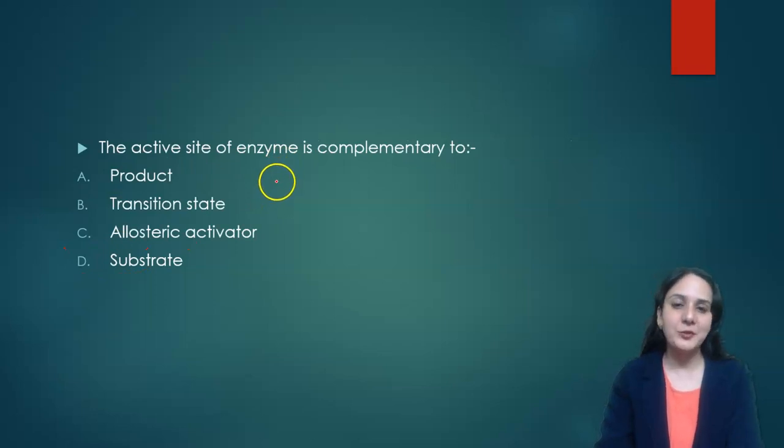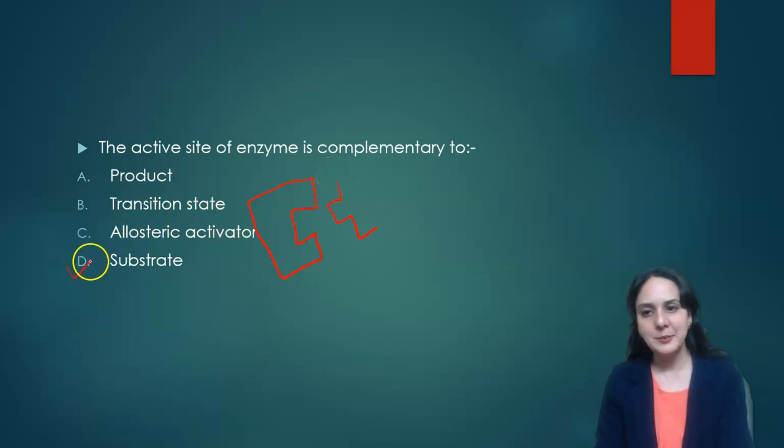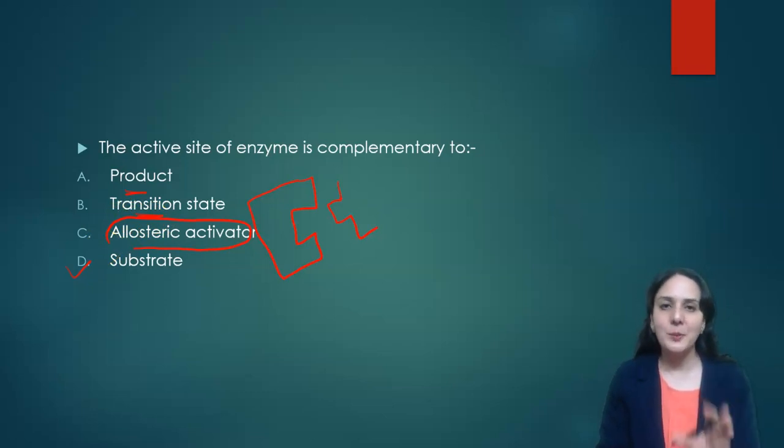Next is: active site of enzyme is complementary to? We know that the active site of the enzyme binds to the substrate. So the substrate fits into it. So their shape is complementary to each other. So the answer is substrate, whereas the product is the end product and the transition state is not the answer, and allosteric activator does not bind to the active site. It binds to some other site and changes the shape of the active site. So the complementary shape is for substrate only.